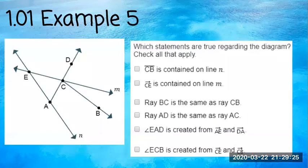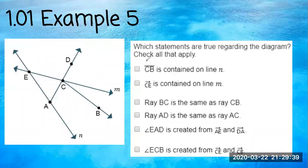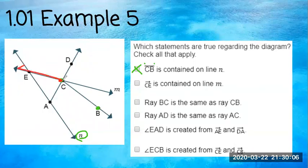Number five: which statements are true regarding this diagram? Notice there are no arrows at the ends, meaning these are line segments. Line segment CB is contained on line N — N is way down here, so no. Ray CE starts at C and goes to E; this ray is contained on line M — that is accurate, it's just a portion of line M.